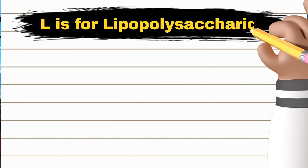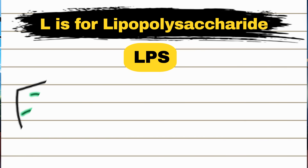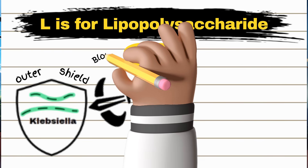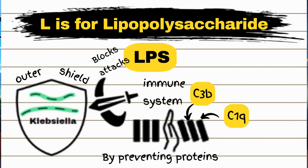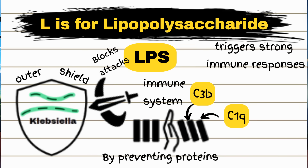Finally, L is for lipopolysaccharide, or LPS — Klebsiella's outer shield. It blocks attacks from our immune system by preventing proteins like C1Q and C3B from attaching and causing cell death. This shield makes it hard for our body to defeat the bacteria. The LPS also triggers strong immune responses, often leading to sepsis. It's like Klebsiella's secret weapon, making it tough for our immune system to mount an effective defense.